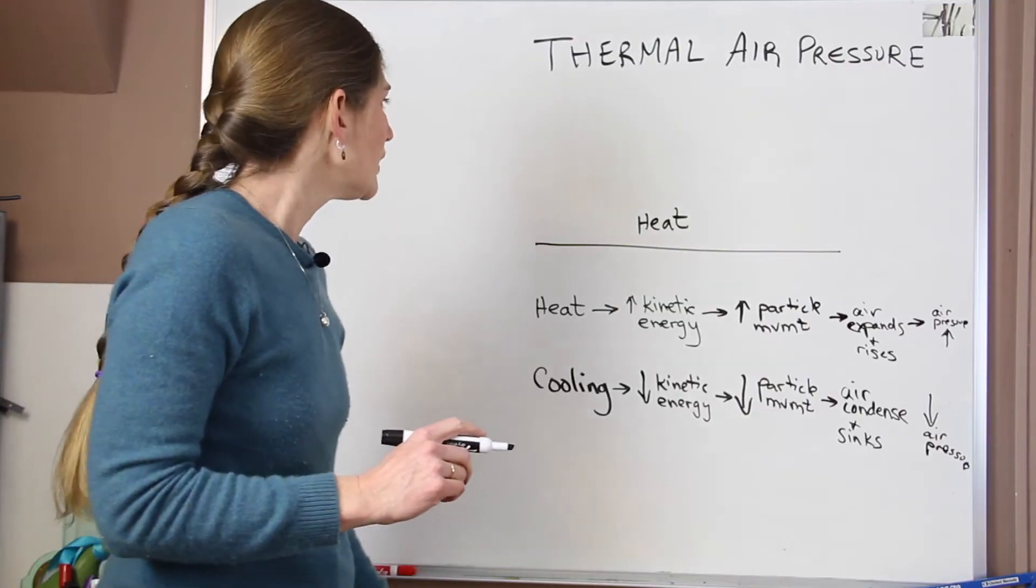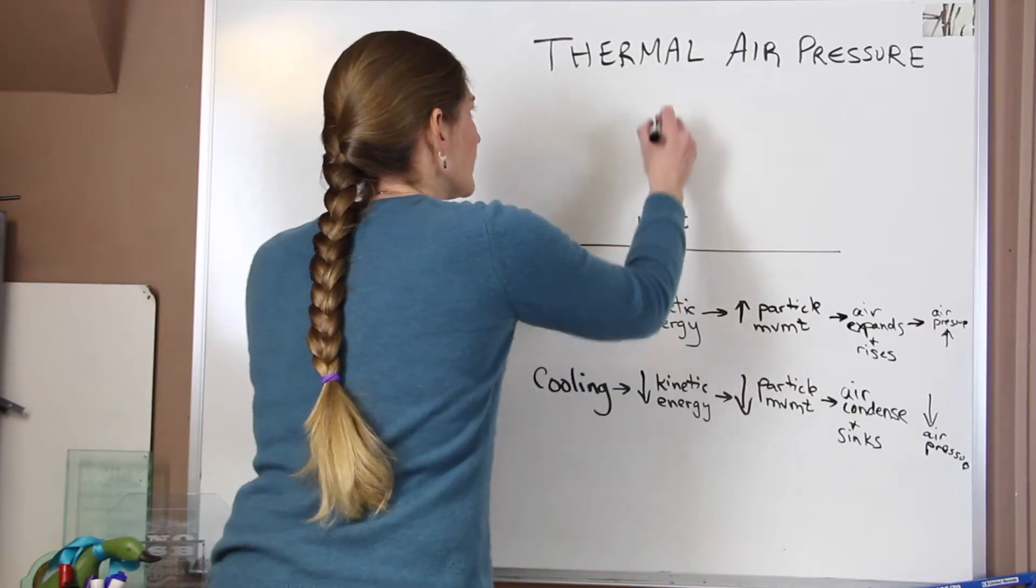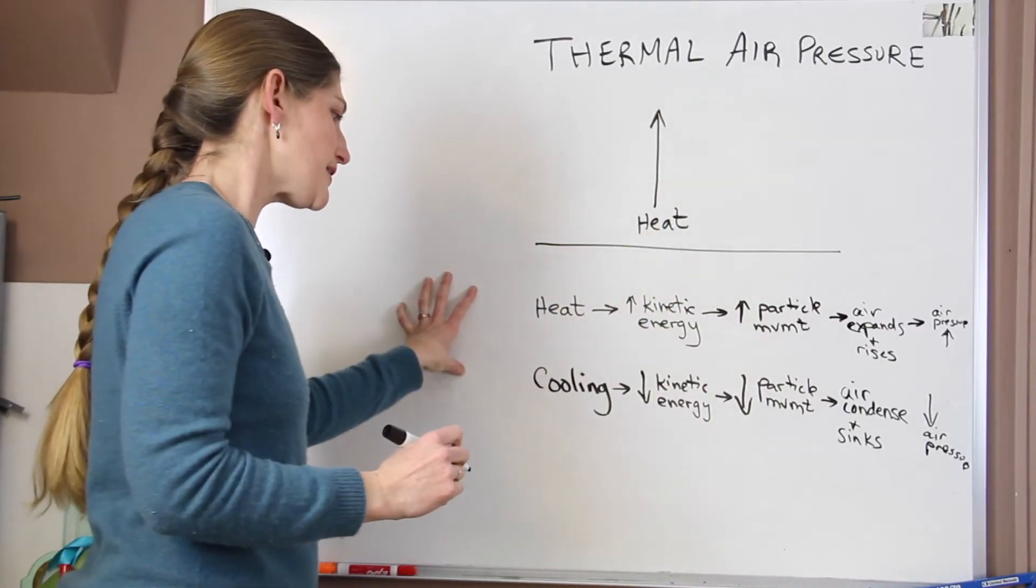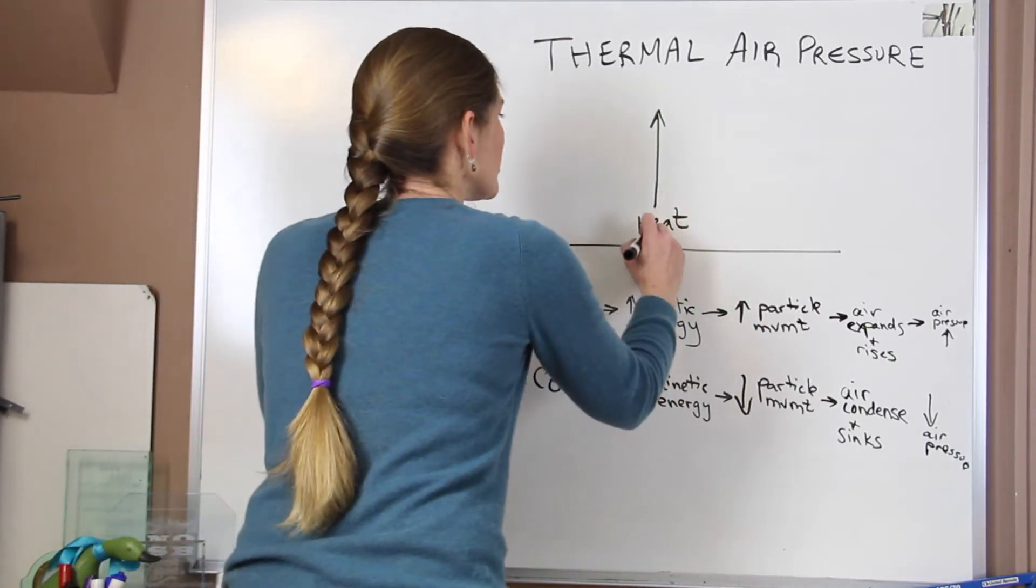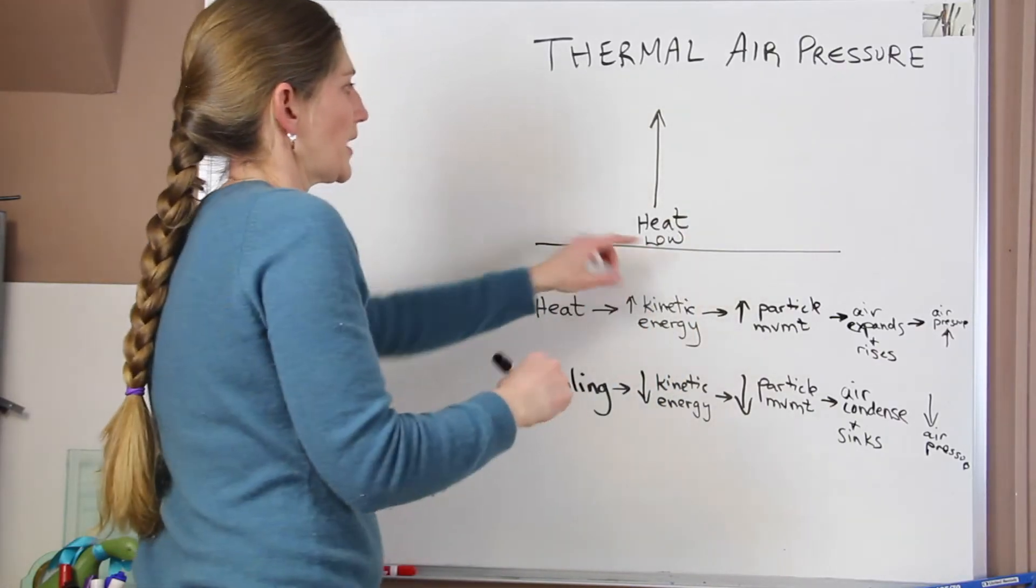So what's happening on the surface? When we have heating, this warms the air and it starts to rise. The heating creates a low pressure at this location.